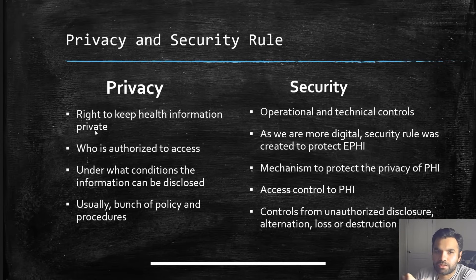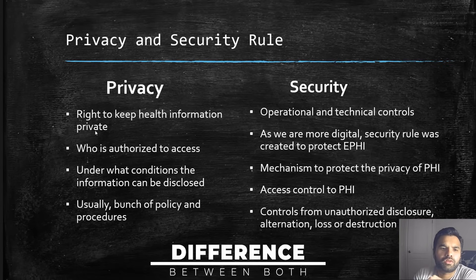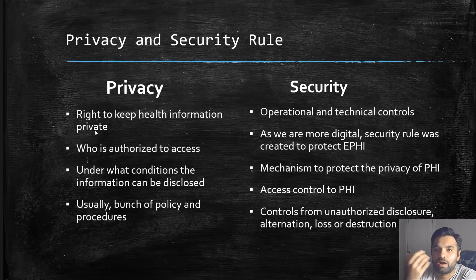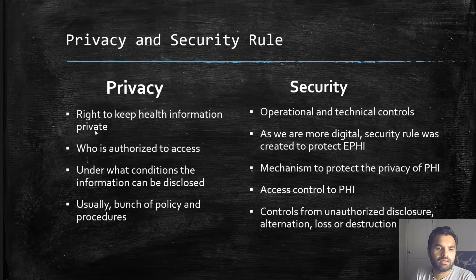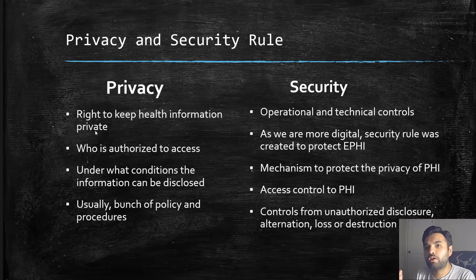There are two rules — Privacy and Security — so what's the difference? Privacy focuses on the right to keep health information private: who can access it, and under what conditions it can be disclosed to a third party. Apart from an assigned doctor or nurse, and perhaps a nominated beneficiary, no one else should be able to access patient data. Sometimes a government agency or auditor may require access, and privacy policies on websites include a clause stating that information can be disclosed to third parties under certain circumstances.